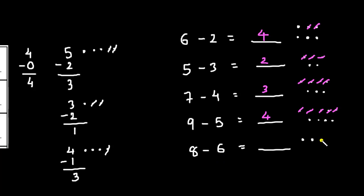8 minus 6. Drawing 8 dots: 1, 2, 3, 4, 5, 6, 7, 8. Now, let's cut 6 from them. 1, 2, 3, 4, 5, 6. We are left with 2 dots. So, 8 minus 6 is equal to 2.